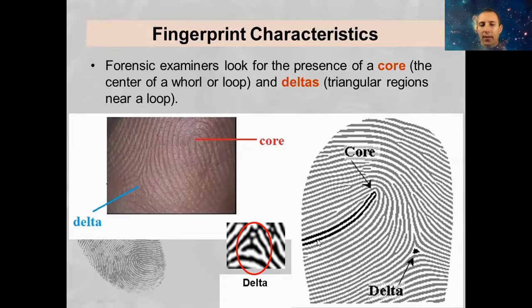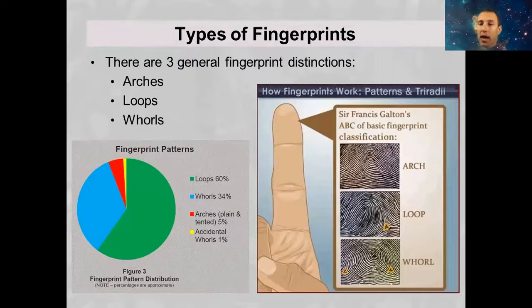We have three general categories of fingerprints: arches, loops, and whorls. As we can see by this distribution, most people are going to have some form of a loop. Unfortunately, radial and ulnar loops are some of the harder ones to identify — it's pretty tricky to tell the difference. That's definitely the hardest one. Arches and whorls are pretty characteristic and pretty easy to identify.